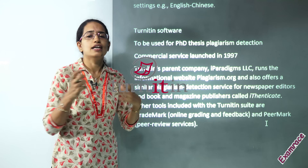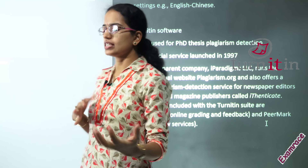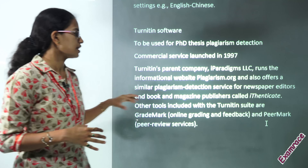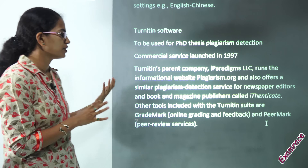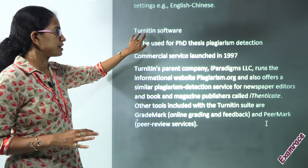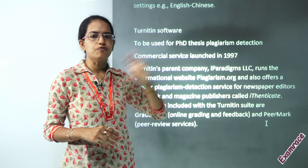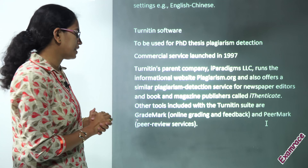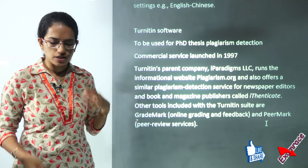Turnitin is the software now being used by MHRD — the Ministry of Human Resource Development in India — to check PhD thesis plagiarism. Turnitin has a parent company known as iParadigms, which runs on the international informational website plagiarism.org and offers services similar to newspaper editors and publishers like Authenticate. Two important tools used by the Turnitin suite are GradeMark and PeerMark. GradeMark handles online grading and feedback, indicating what percentage has plagiarism. PeerMark provides peer review services.